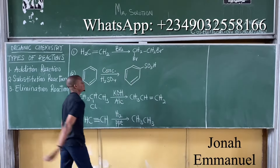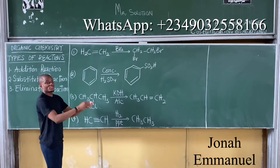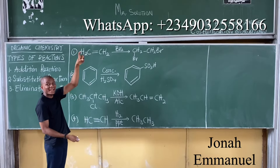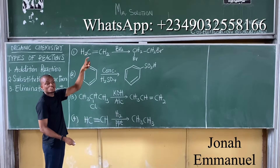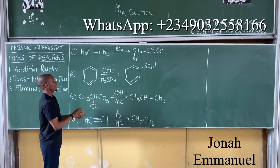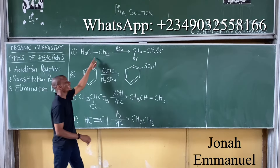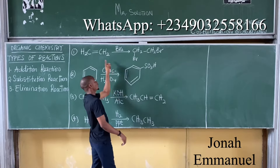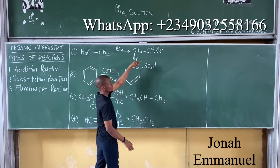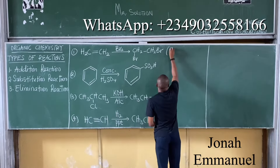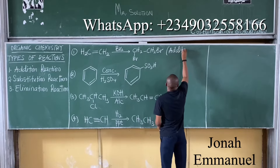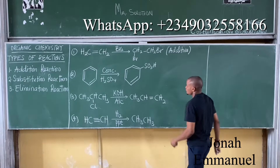How many of those are addition? For addition, it breaks down from a higher hydrocarbon to a lower one — from alkene to alkane, higher to lower. Number one: from double bond to single bond. That's addition.